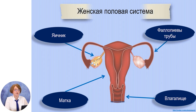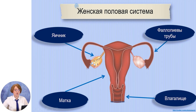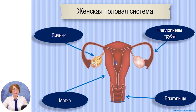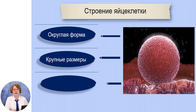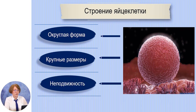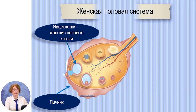Органы женской половой системы – это железы, яичники – парные железы, расположены с двух сторон. Маточные трубы направляются в мышечный орган – матку, которая затем переходит во влагалище. Яйцеклетка – это женская половая клетка, или женская гамета. Она округлой формы и очень крупных размеров, значительно более крупных, чем сперматозоид. Отличительная особенность яйцеклетки – она неподвижна.